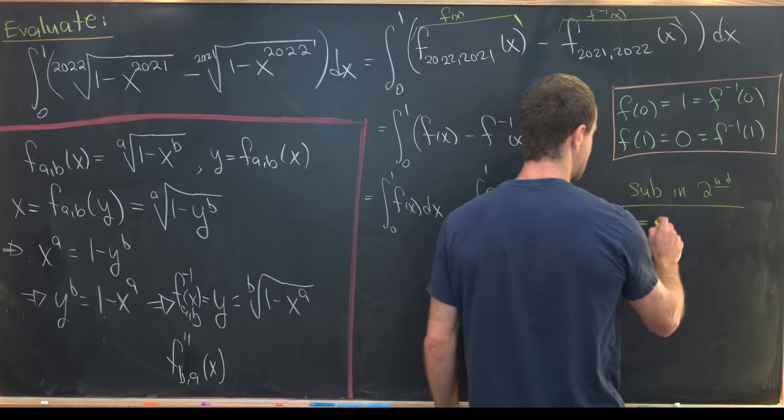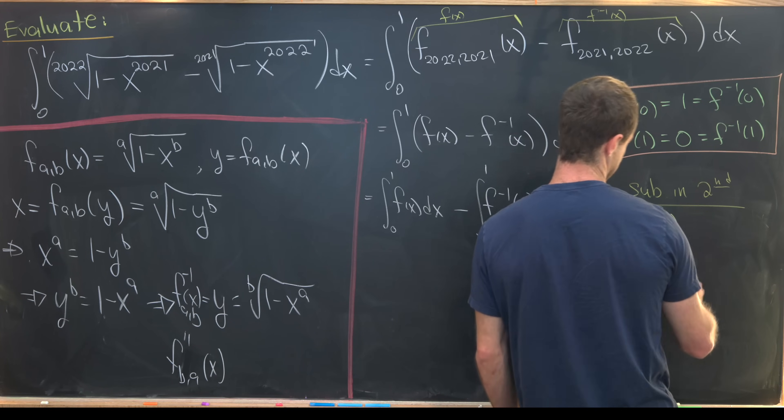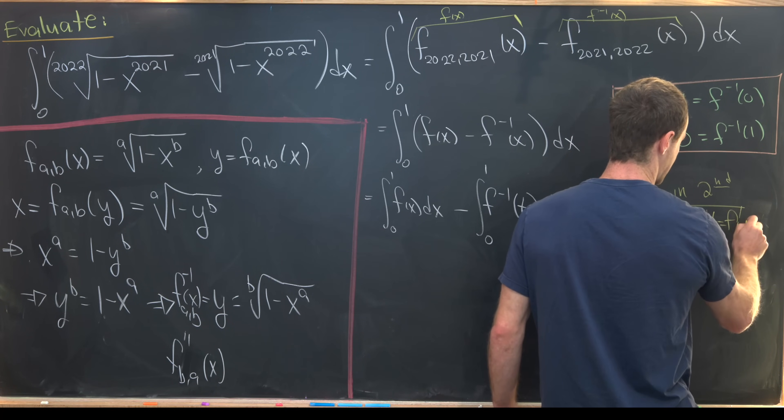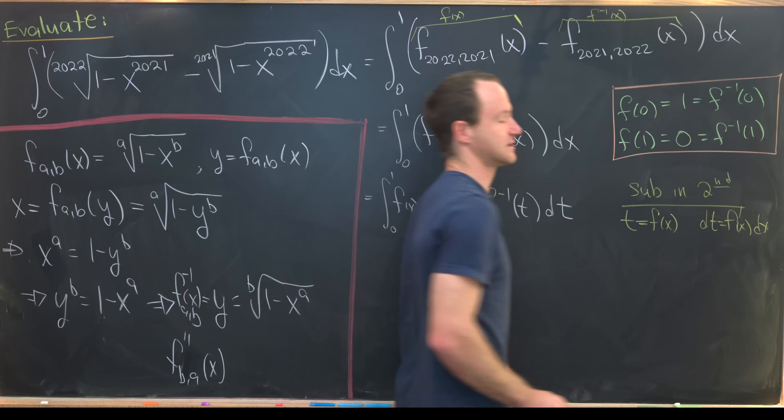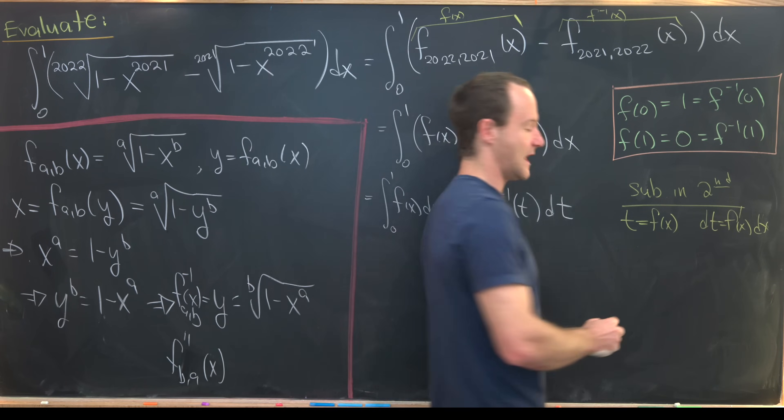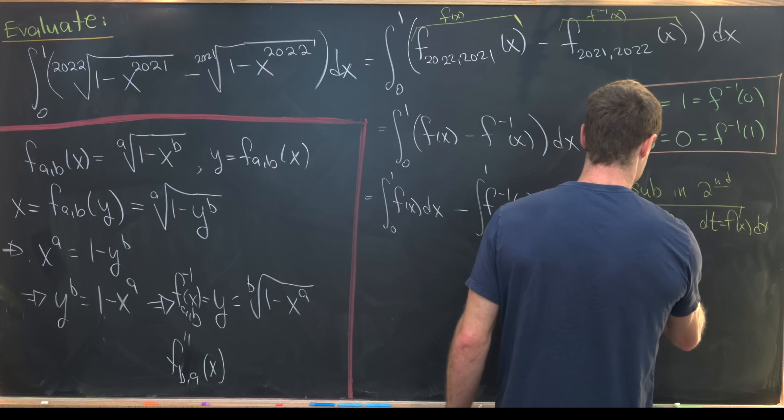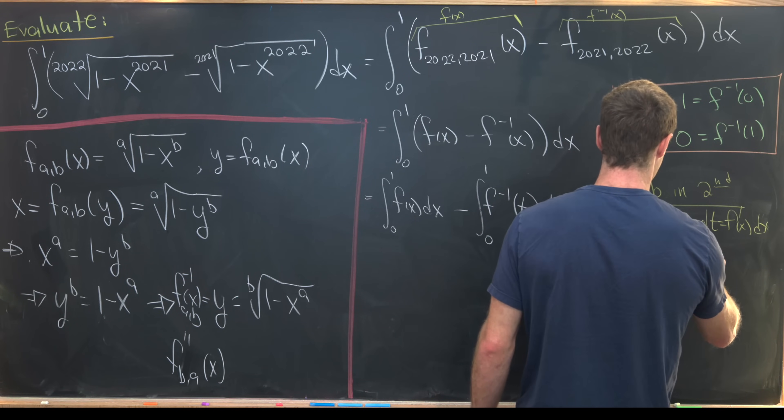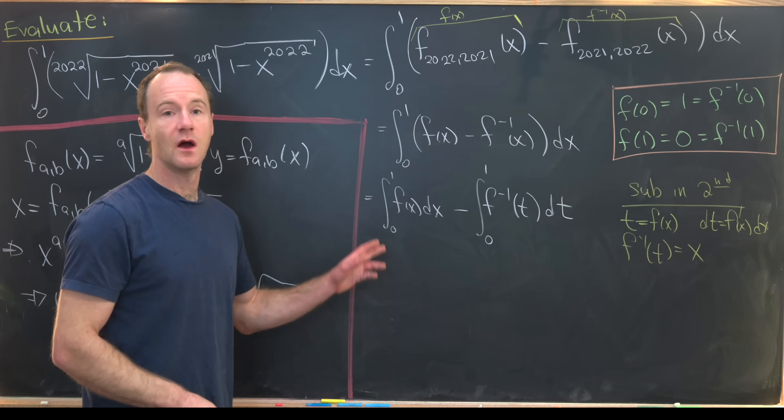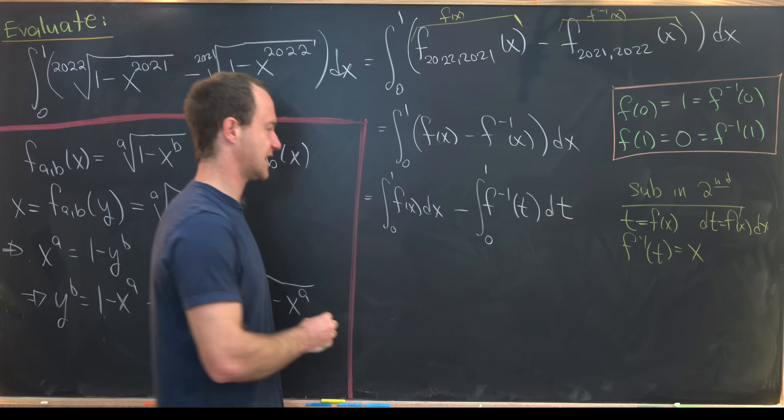I'll take t equal to f of x. That means that dt is equal to f prime of x dx. That means that f inverse of t is equal to x. So let's see what that does to our second integral.